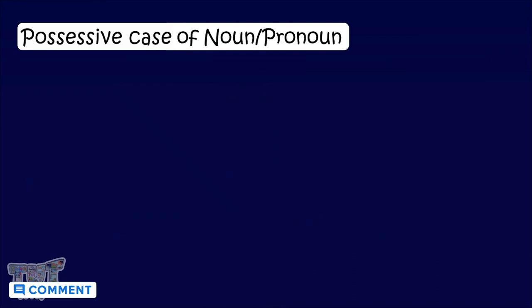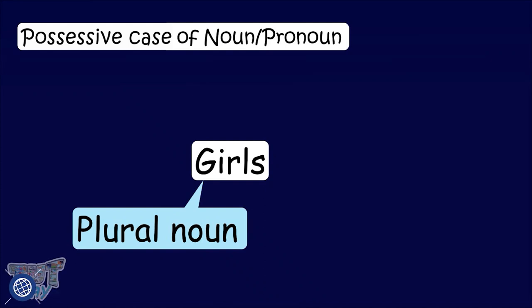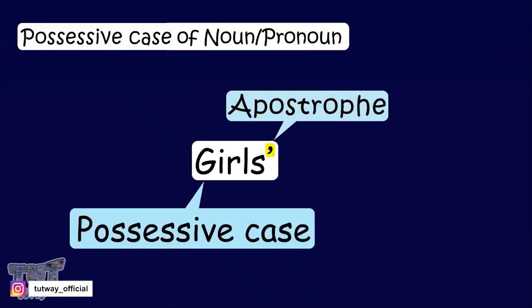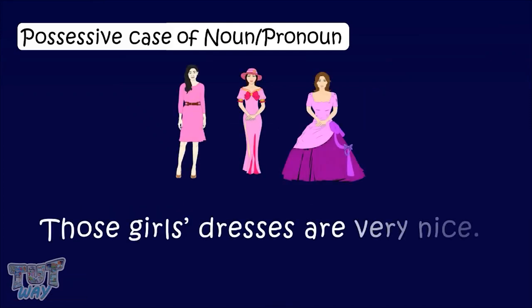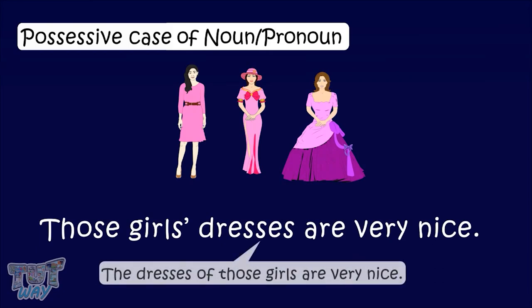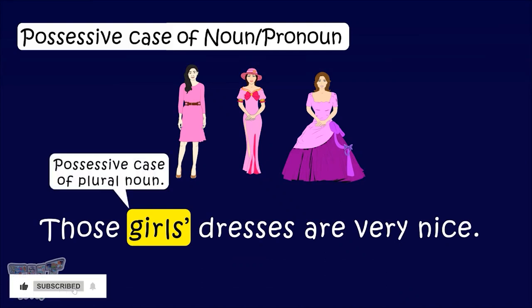And if the noun is plural, for example 'girls,' we can make a possessive noun by adding an apostrophe at the end. Let's have a look at example sentences. Those girls' dresses are very nice. This means that the dresses of those girls are very nice. Here, 'girls'' with an apostrophe at the end is a possessive case of a plural noun.